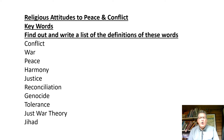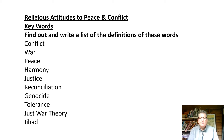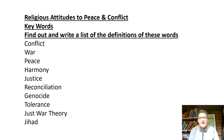Here are the words on the first screen: conflict, war, peace, harmony, justice, reconciliation, genocide, tolerance, just war theory, and jihad. Your job is to find good definitions of all of those words. You know some of them — we've done some in class — so it's a case of perhaps repeating them or seeing if you can remember them. These are the sort of words that may well come up in multiple-choice questions as definitions, and they're certainly the technical language that you will get marks for throughout your exams.